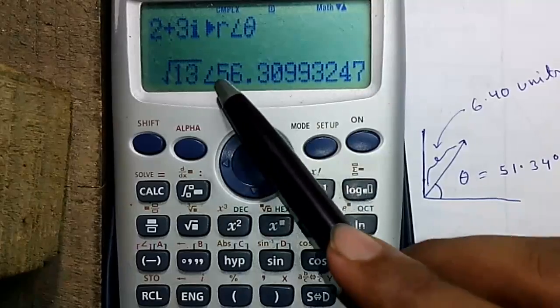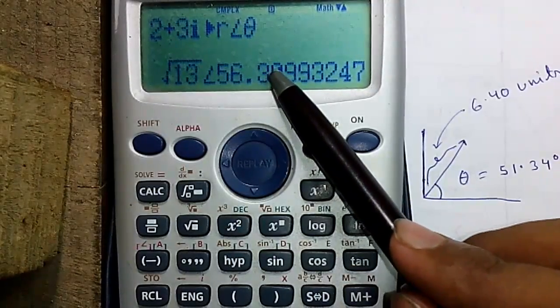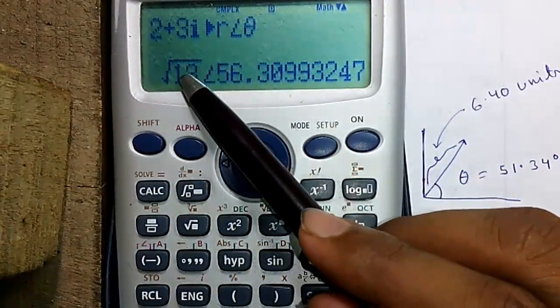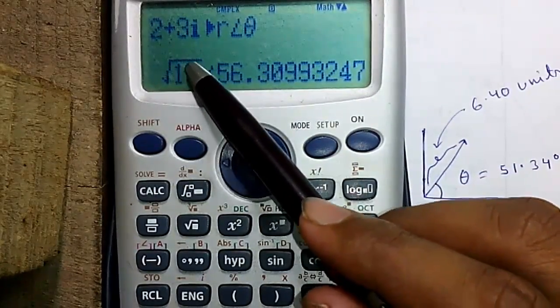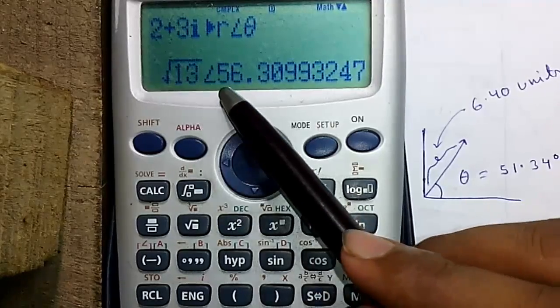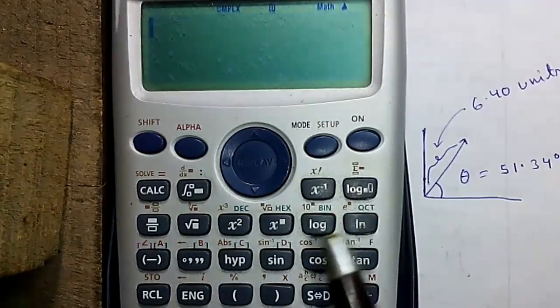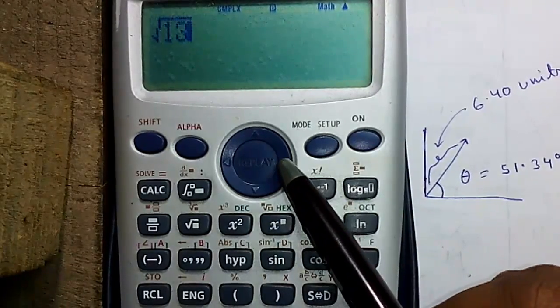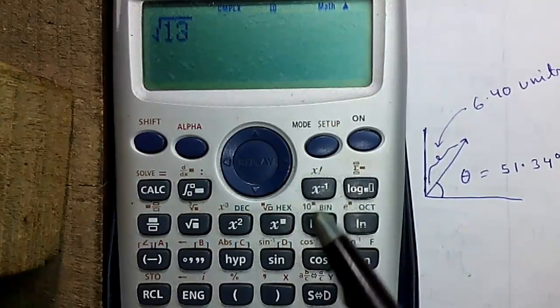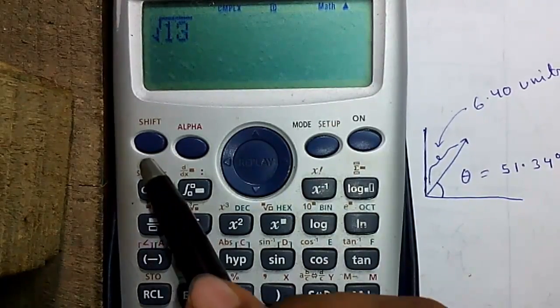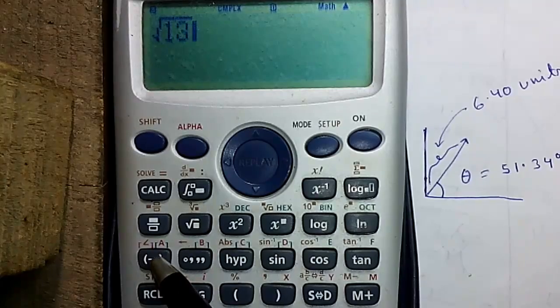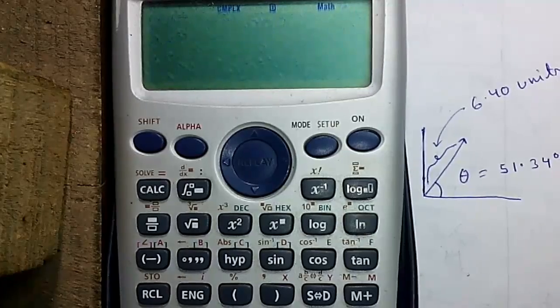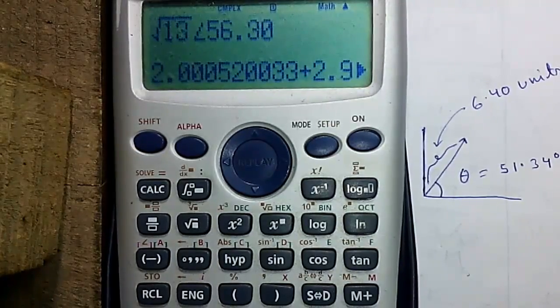So let us do the reverse conversion from polar to rectangular. For that we'll use the component value √13 and the angle value 56.30. Let's enter them: √13, give a space with the joystick right, and for angle press shift and this minus button.